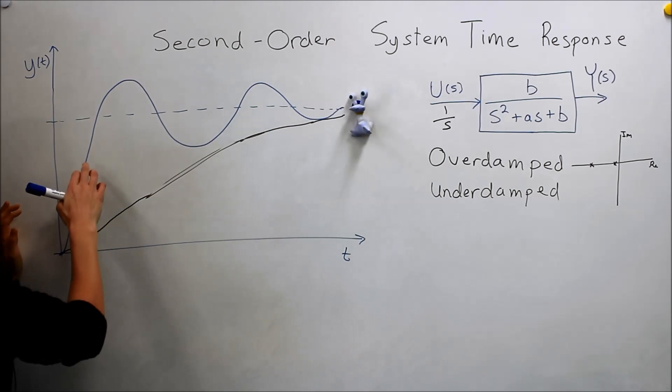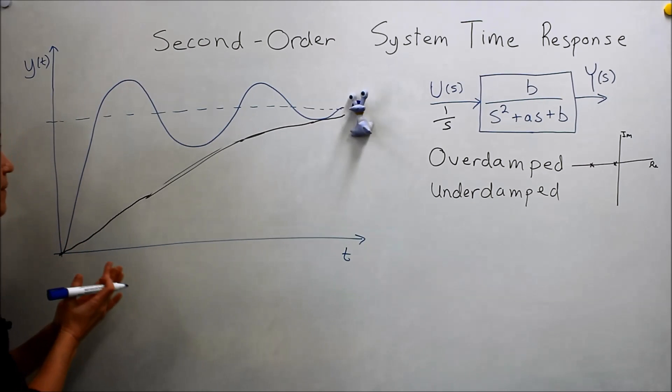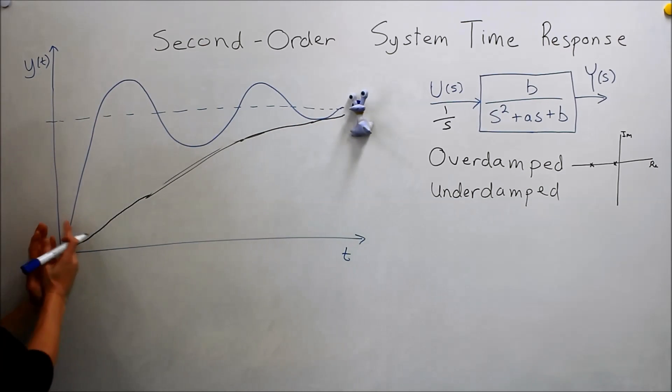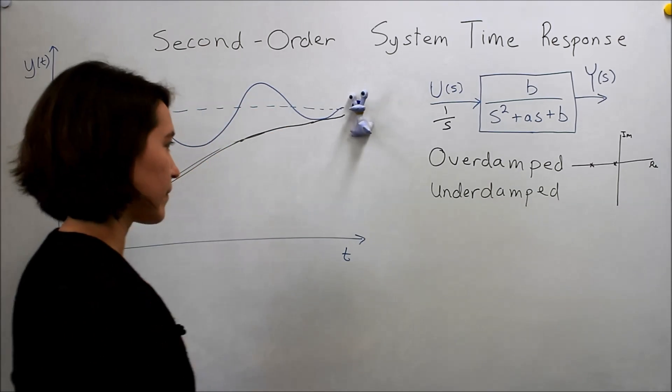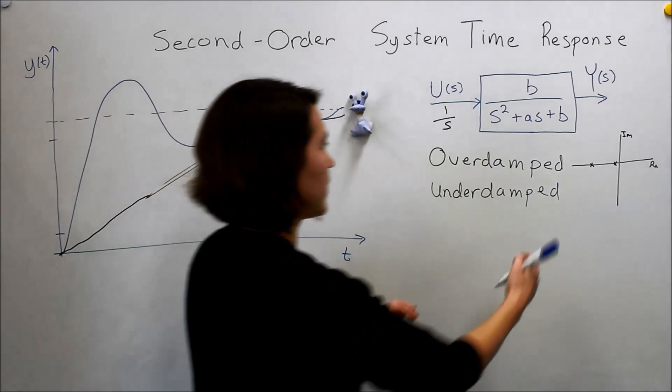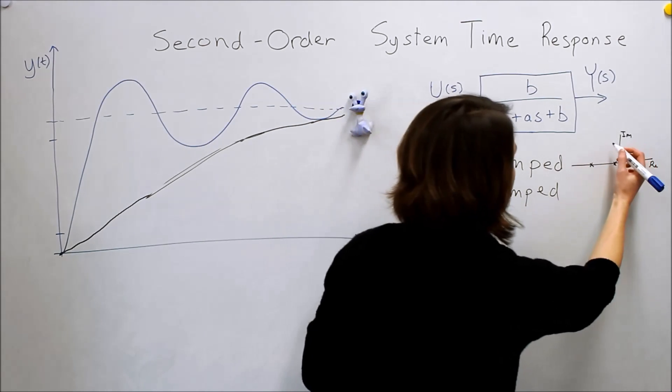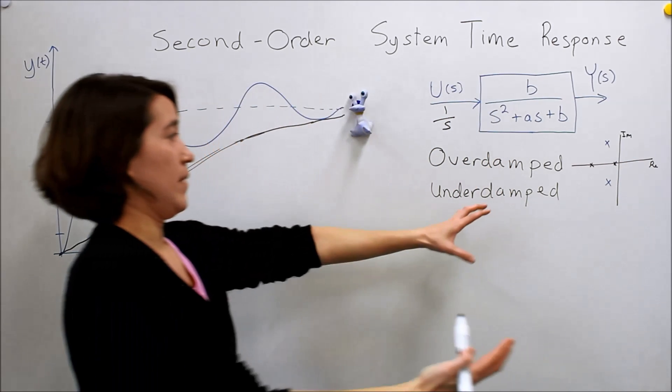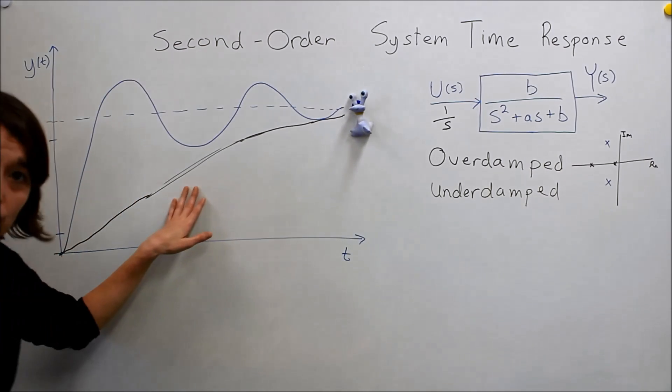If you think about settling time and rise time, this settling time is just as long, it takes a long time, but the rise time is very short. To go from 10 to 90 percent was very fast, but it just takes a long time to settle. And if we look at the poles for that one, that would be in the imaginary, has some imaginary component, so maybe about here. We would still have some imaginary component, and it's relatively close to the imaginary axis here.